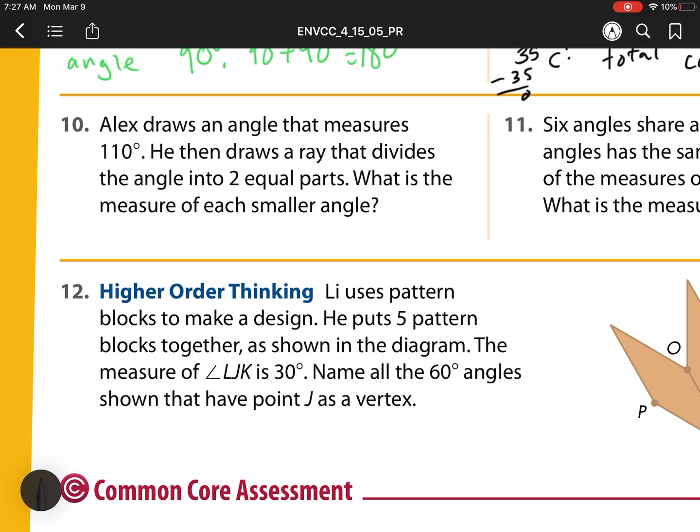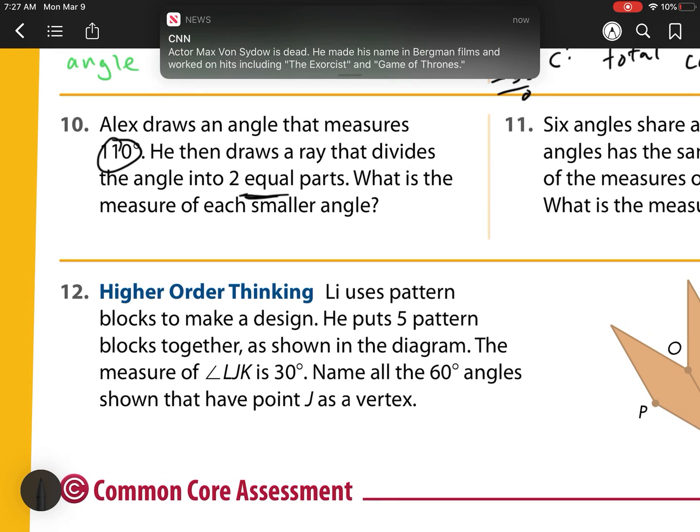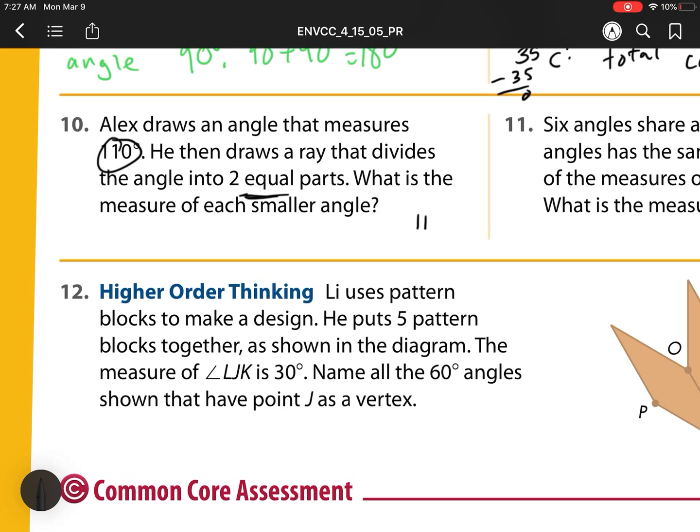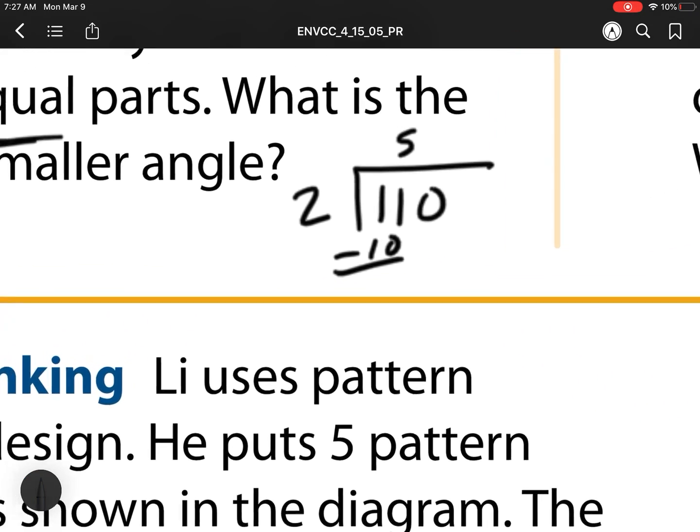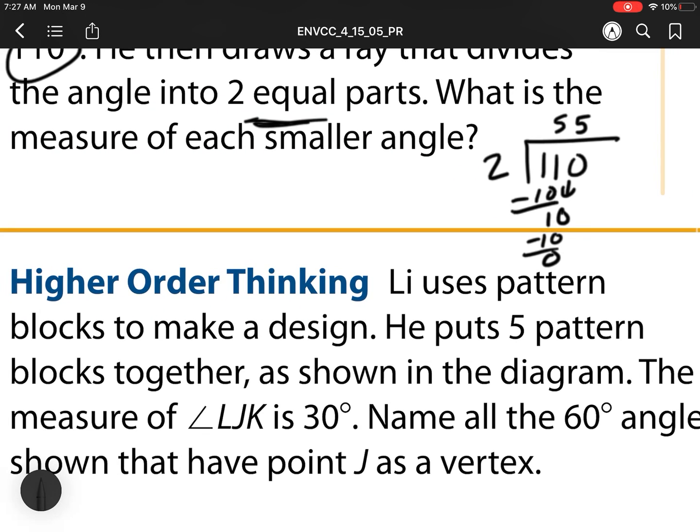So number 10, it says Alex draws an angle that measures 110 degrees. He then draws a ray that divides it into two equal parts. What is the measure of each smaller angle? We have 110 degrees, and then we have two equal parts. So I'm breaking up into two equal groups. That's 110 broken up into two equal parts. So two goes into 11 five times. Multiply, subtract, check, bring down. Multiply, after I divide, check. So what's the measure of each angle? It's 55 degrees.